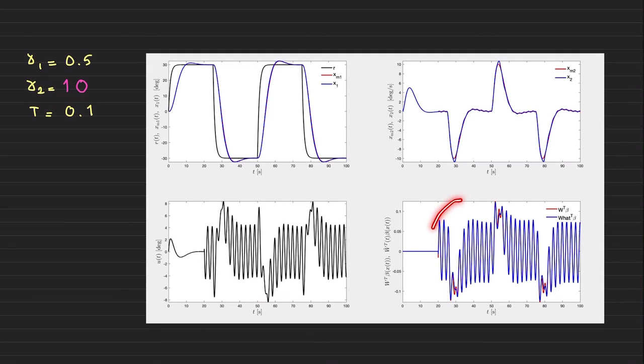Now I am increasing gamma two next from one to 10, and we have a very nice performance. We almost perfectly cancelling the uncertainty. We have some little areas for improvement. And this is almost perfect following of the reference model. We have some mild oscillations here. To get rid of this,